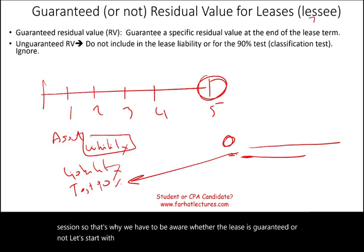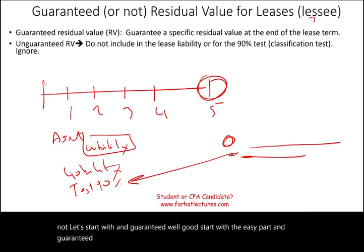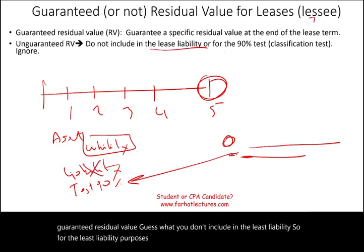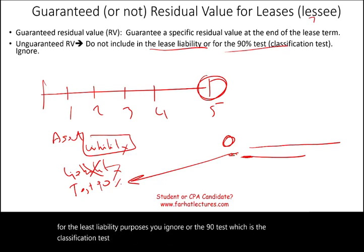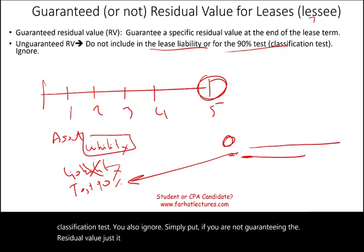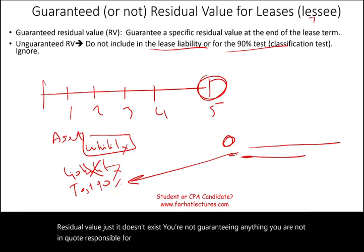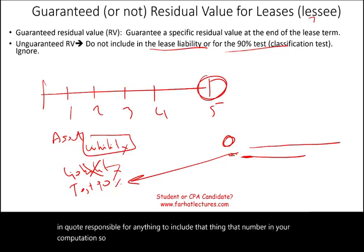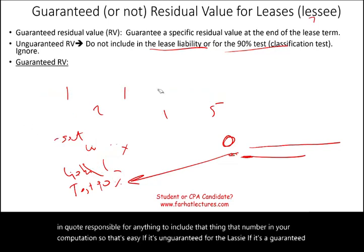Let's start with the easy part: unguaranteed residual value. If the residual value is unguaranteed, you don't include it in the lease liability. For the 90% classification test, you also ignore it. Simply put, if you are not guaranteeing the residual value, you are not responsible for it, so you don't include it in your computation.